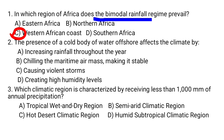Question number two: The presence of a cold body of water offshore affects the climate by chilling the maritime air mass, making it stable. The correct answer is B.